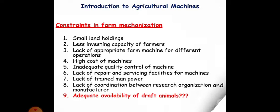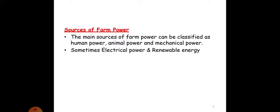Talking about the source of farm power, the main sources of farm power is classified as human power, animal power, and mechanical power. Sometimes electrical power and renewable energy is also considered as the source of farm power.